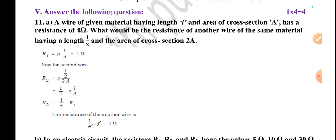So R1 equals rho l by A, which equals 4 ohm. Now the second wire: R2 equals rho times l by 2 divided by 2A, which turns into 1 by 4 times rho l by A. We can write this as R2 equals 1 by 4 times R1. So the resistance of the another wire is 1 ohm.